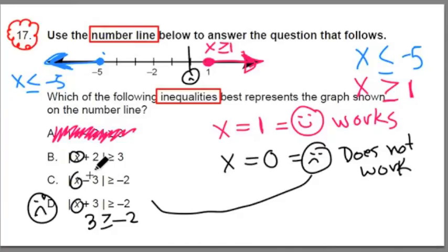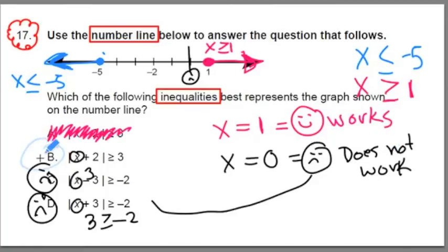What about c? 0 minus 3 is negative 3. Absolute value of negative 3? 3. Is 3 greater than or equal to negative 2? Yes, it is, but it's not supposed to be. Frowny face. And finally, we have this one, b. b is actually the correct answer, team. Big smiley face for b.